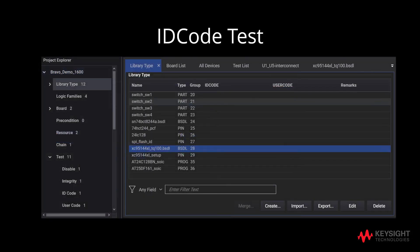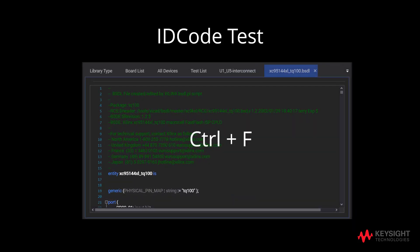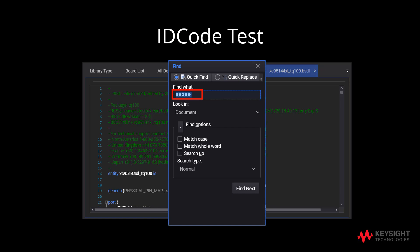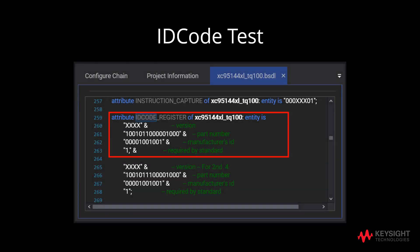Now, we will search for the ID code from the program file. After going to project explorer, click on library type. Next, double click on XC95144XL_TQ100.BSDL. This will prompt you to the next window. Following that, select Control-F to search for ID code. This will then prompt you to identify where the ID code is, to view the version, part number, manufacturer's ID, etc.